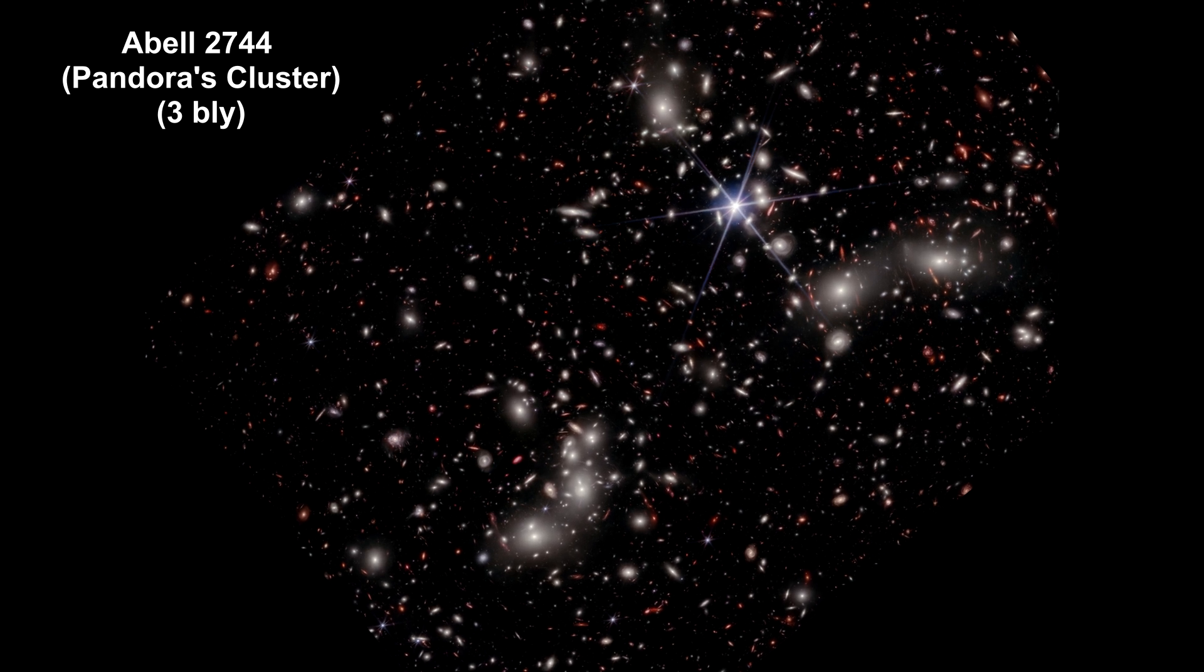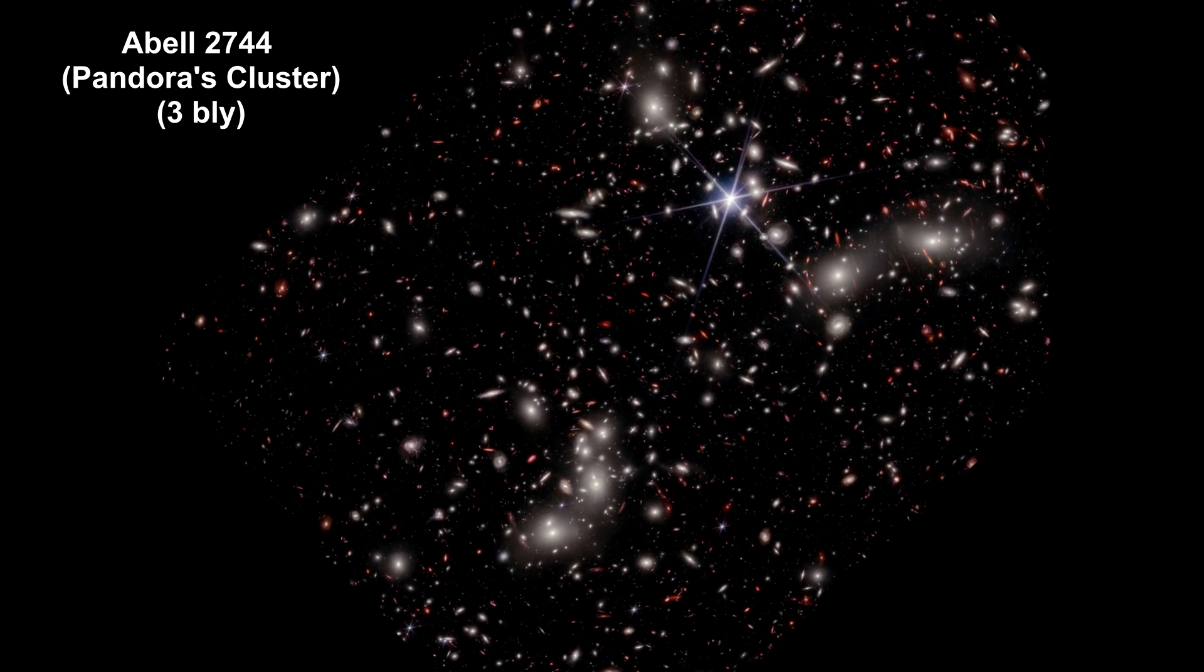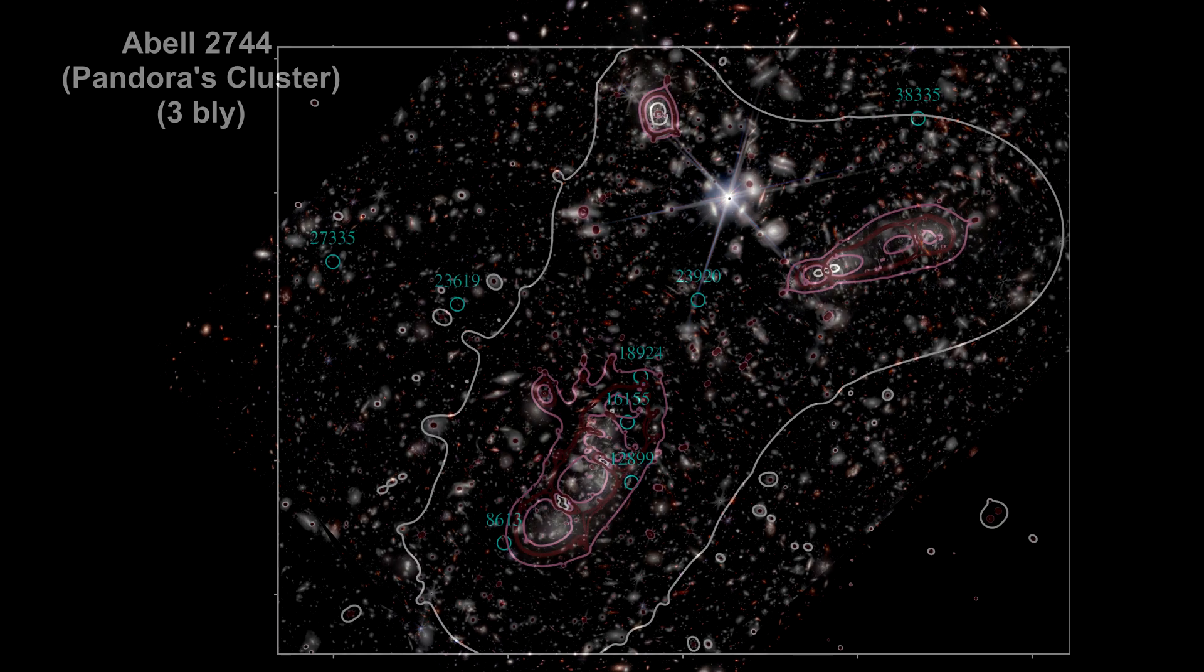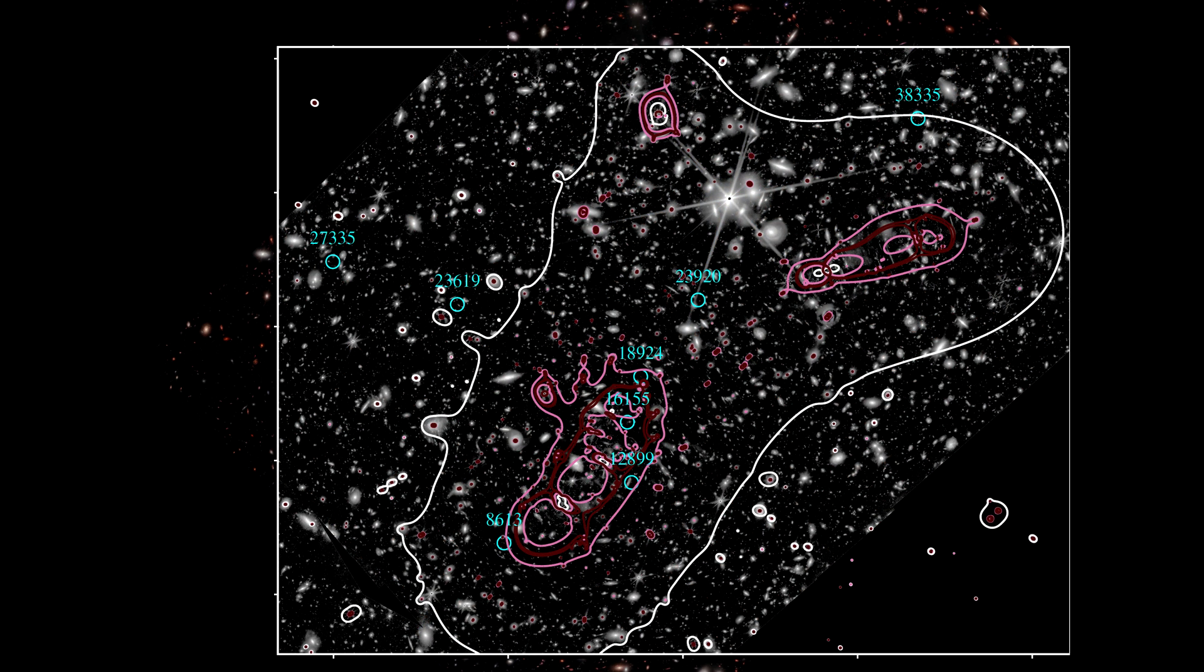The lensing magnification effect allowed the team to study very distant sources of light beyond the cluster. The white and red lines are the lensing critical curves. Lensing magnifications ranged from 2 to over 100 times their actual size. The team found 8 extremely faint galaxies that would otherwise be undetectable. They are circled and numbered. Two of the sources, 12899 and 16155, are thought to be multiple images of the same galaxy.